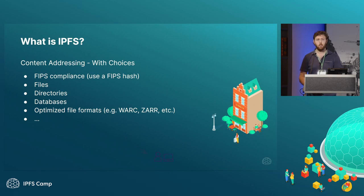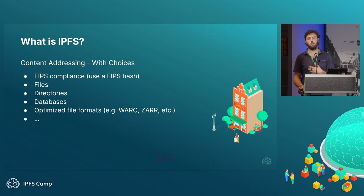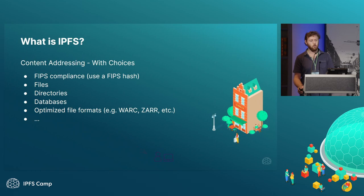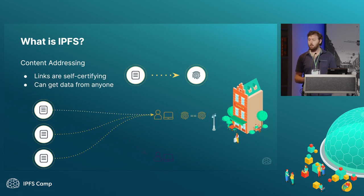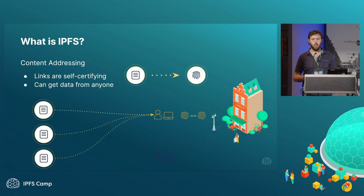IPFS is content addressing, but with choices. There are different ways and different types of data you have, different ways you might need to work with it for compliance reasons. You might need to use FIPS, which is a set of standards around how technologies can be used. You might be working with files, directories, or databases, or have specific requirements. Workin's are two examples used in the open data space where they had requirements on how they worked with the data. Really, all we care about is doing the fingerprinting thing to make the data self-sovereign, so that data is not beholden to whoever the current custodian of it is.